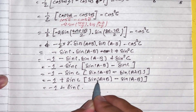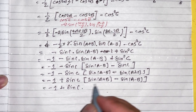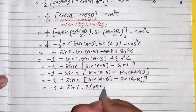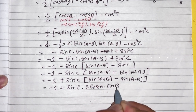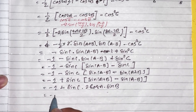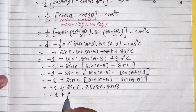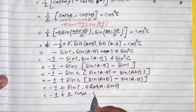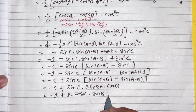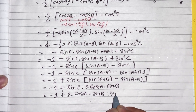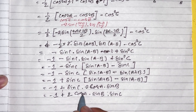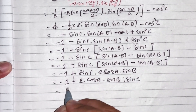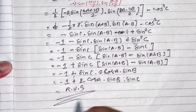Combining: minus 1 plus sin c times [sin(a plus b) minus sin(a minus b)] equals minus 1 plus sin c times 2 cos a sin b. So the result is minus 1 plus 2 cos a sin b sin c, which is our RHS. Hence proved.